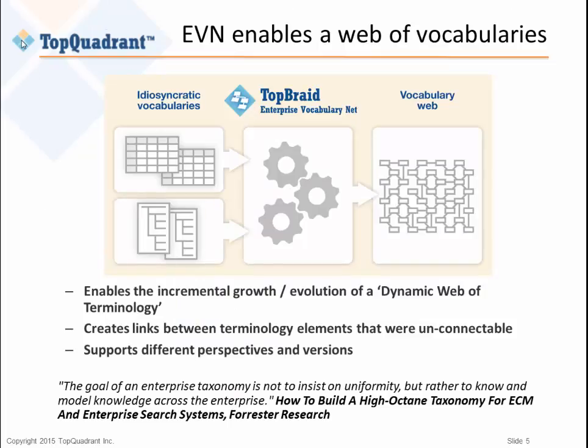The N in EVN — Enterprise Vocabulary Net — is about how it lets you create a network of vocabularies. For example, if you started a pilot project and later started a separate unrelated one, and then realized after a few months that they weren't unrelated, EVN makes it easy to say this term in this vocabulary has this relationship to this other term in another vocabulary. That relationship might be standard — broader, narrower, or related — or a custom one you define, just by filling out a form.